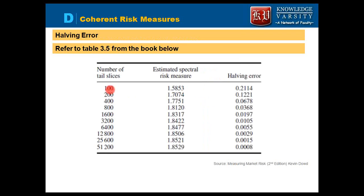Table 3.5 from the book shows a better approach: doubling the number of slices each time — 100, 200, 400, 800. The estimated risk measure becomes 58.53, then 70.74, then 77.51. The difference between 70.74 and 58.53 is 2114 — this is the halving error. If you halve the slices from 400 to 200, this is the additional error you introduce.